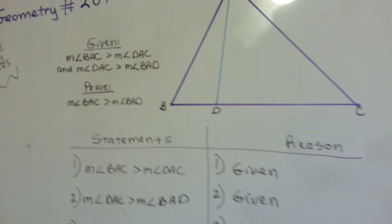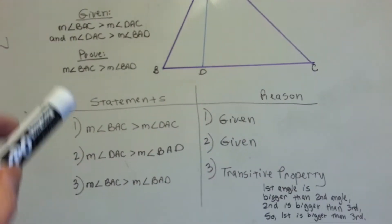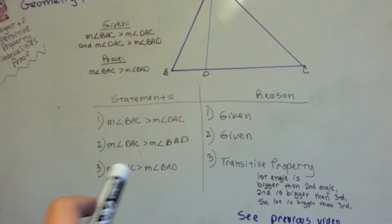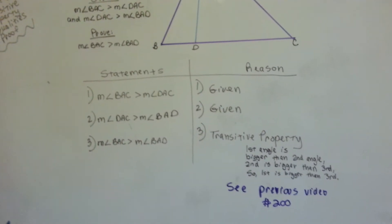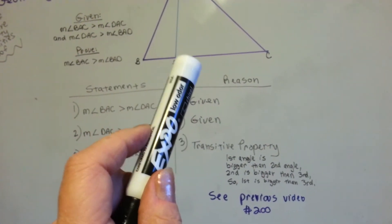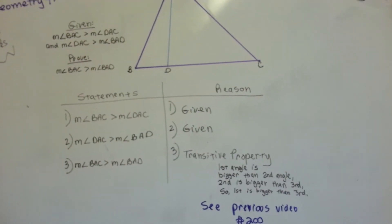And you'll do it with the transitive property. So all you have to do is list your givens, and for your proof, list the transitive property. The first angle is bigger than the second angle, the second is bigger than the third, so the first must be bigger than the third.